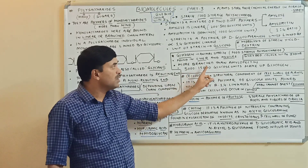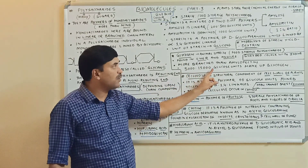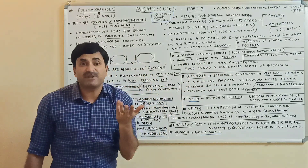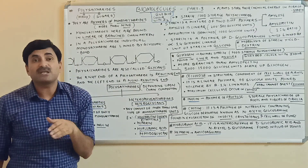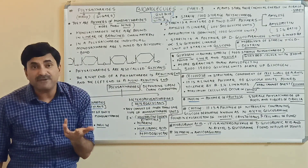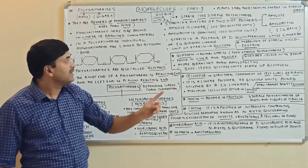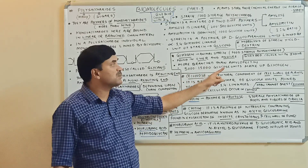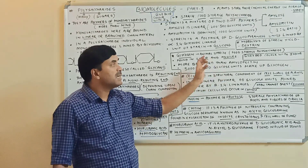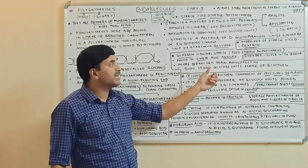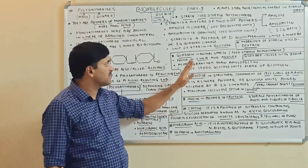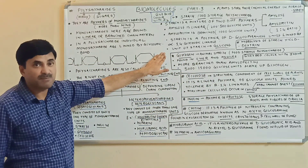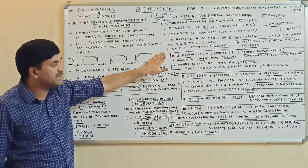5000 to 15000 glucose units — and sometimes more than 15000, up to 20000 or 25000 — combine together to form glycogen. So glycogen is also a very important homopolysaccharide.